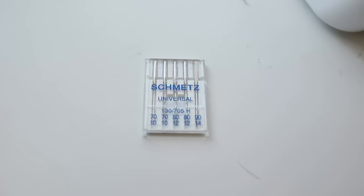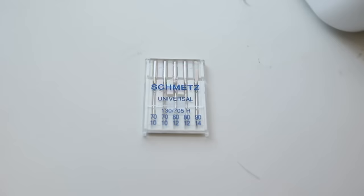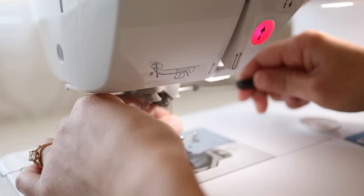They come in a variety of sizes. 70-10 can be used for fabrics like silk. 80-10 is a go-to needle you could use for everyday projects. And 90-14 can be used for heavier weight material like denim.